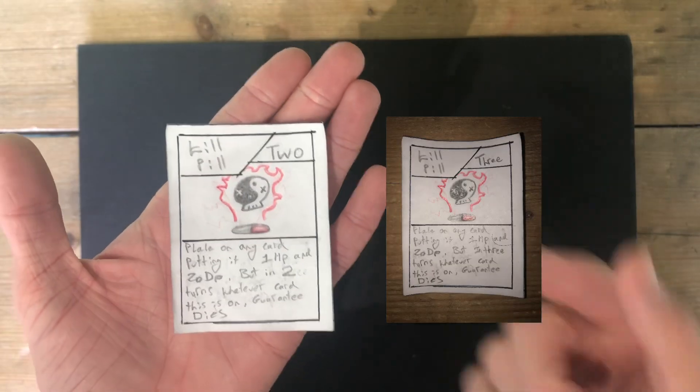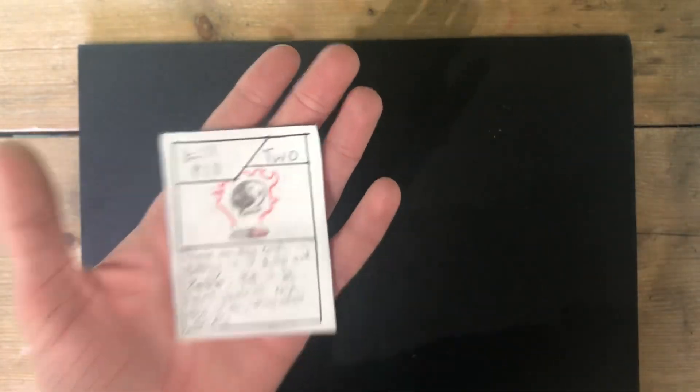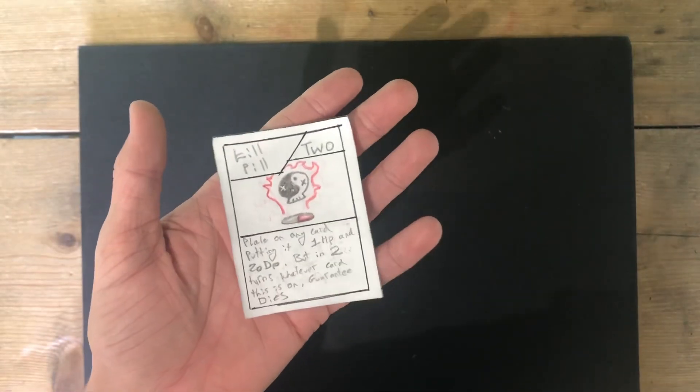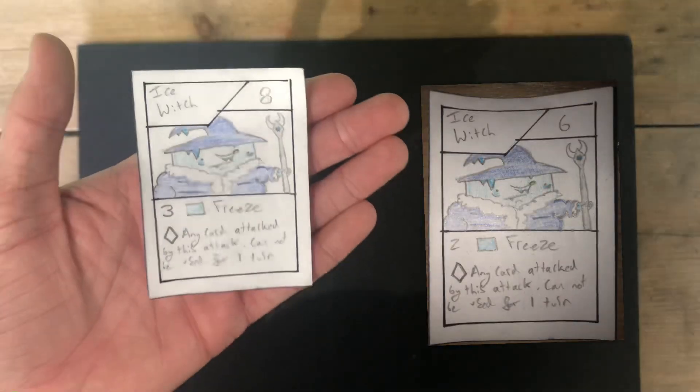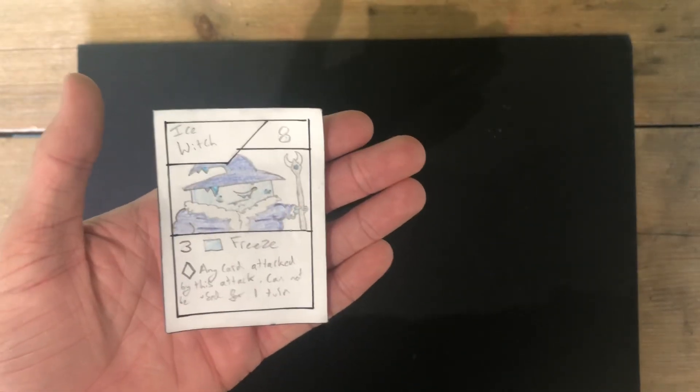Starting off, the Kill Pill is now going down to a lifespan of 2, so after 2 turns, the Kill Pill will kill whatever card it's on. Next up, the Ice Witch is gaining 2 HP and 1 damage to make it a little bit better.